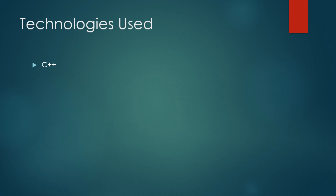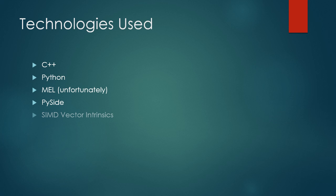To summarize the technologies we'll use: a few different programming languages and libraries, including C++, Python, and unfortunately Mel — I'm not a big fan of Mel, I much prefer Python. We'll use a little bit of PySide to create a UI, and we'll learn about SIMD vector intrinsics — if you don't know what that is, don't worry, we'll cover it later — it's just a way to speed up calculations on the CPU. We'll use OpenCL to write our GPU kernel so we can get really fast speeds when evaluating on the GPU.